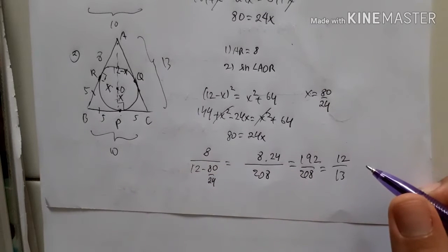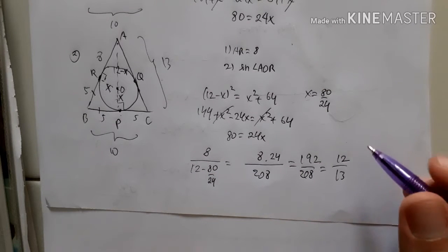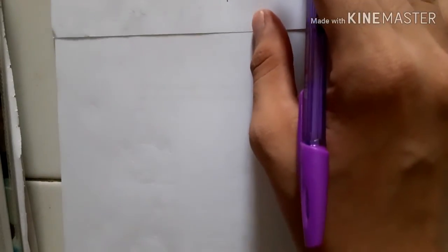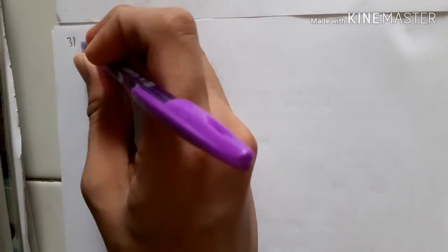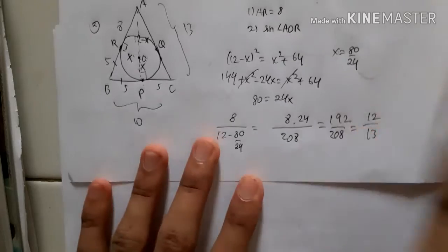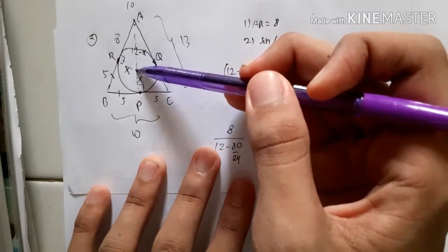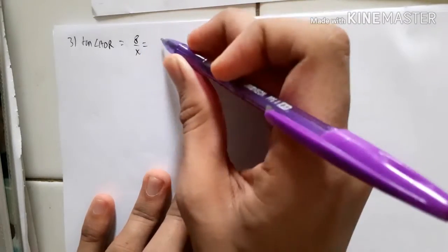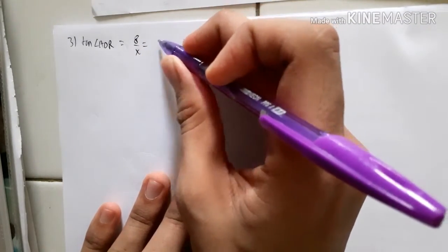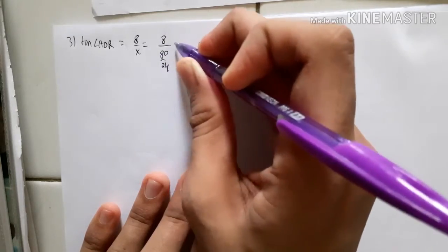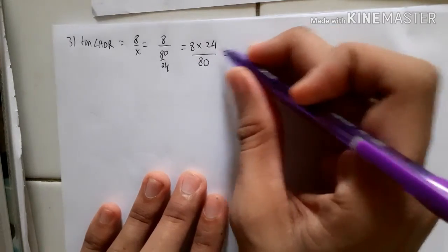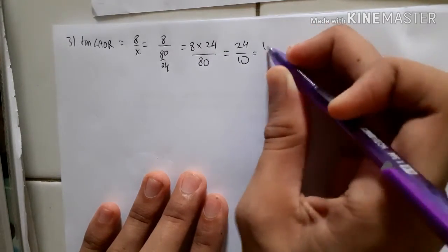Simplifying 192/208 by dividing by 16 gives 12 over 13, so sine of angle AOR is 12/13. For part 3, the tangent of angle AOR is 8 over x. Since x = 80/24, we get 8 × 24 over (8 × 24 − 80) = 192/112, which simplifies to 12/5.